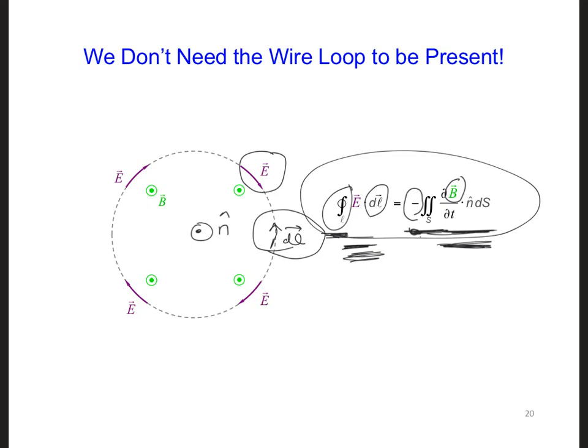So either way, just choose a direction for n hat or choose a direction for dl. And as long as you use the right-hand rule and you're consistent, then the signs will work out.